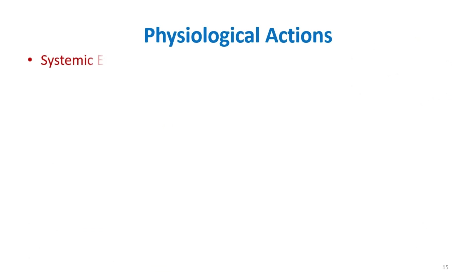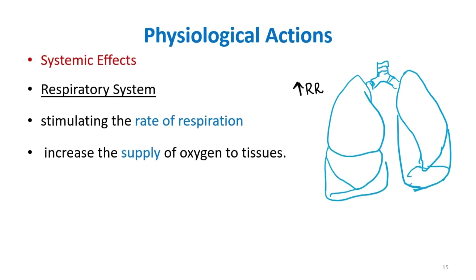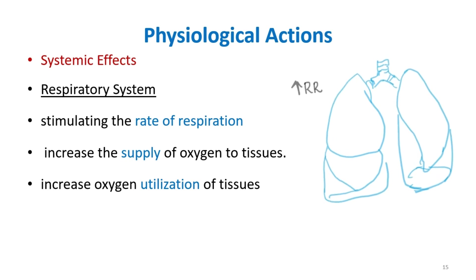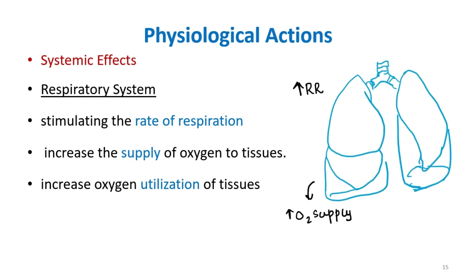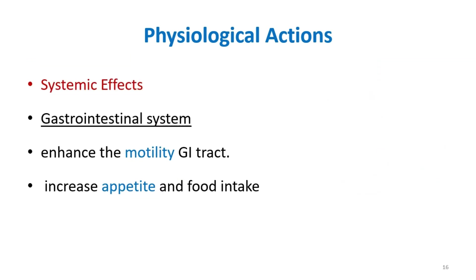In the respiratory system, thyroid hormone stimulates the rate of respiration and increases the supply and utilization of oxygen by the tissues. In the gastrointestinal system, it enhances the motility of the GI tract. That is why in hypothyroidism we may have constipation, and in hyperthyroidism we may have diarrhea.